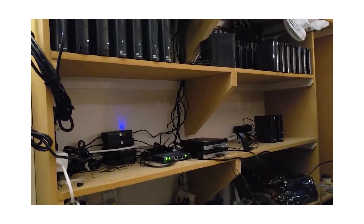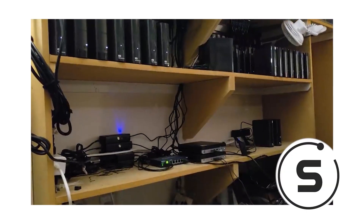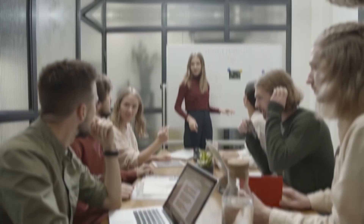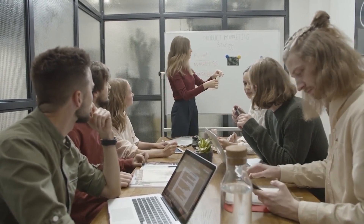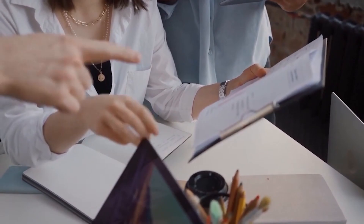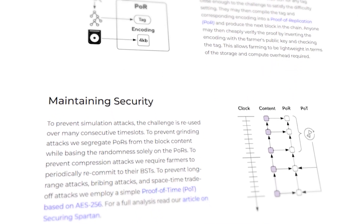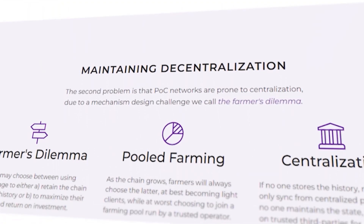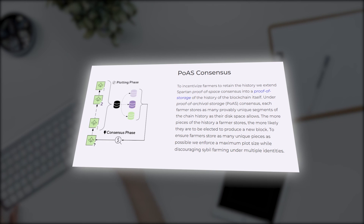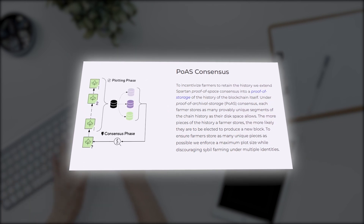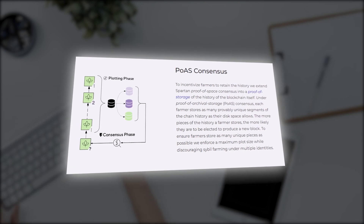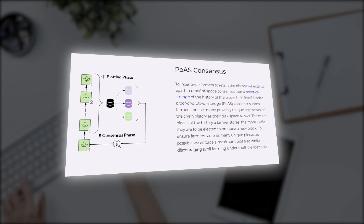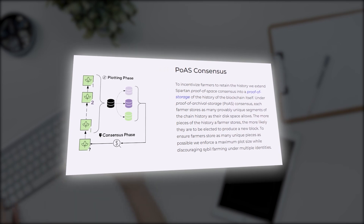How does it work? First, hosts pledge free disk space and agree to store data on behalf of the network in exchange for Subspace tokens. When a new device is connected to the network, its owner generates a storage contract that determines the amount of disk space and the reward interval. This space is seeded using the owner's private key, which allows implementation of proof-of-archival storage. This consensus protocol is embedded in the storage contract, which is independently placed on the database and transmitted to validators for confirmation and inclusion as a transaction in the next block of the ledger.